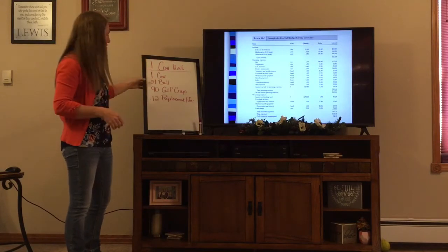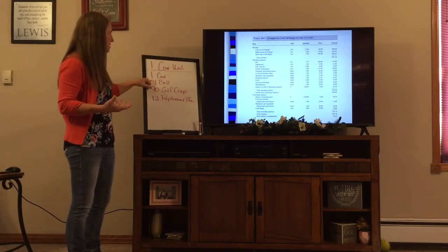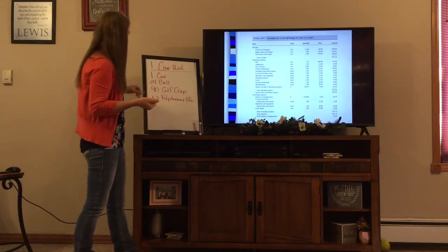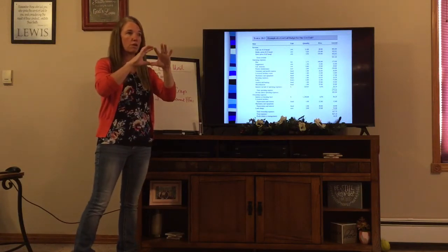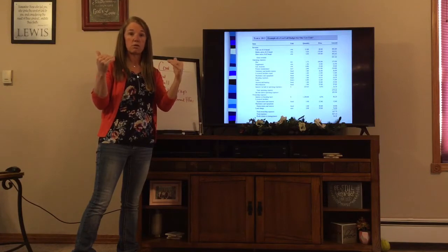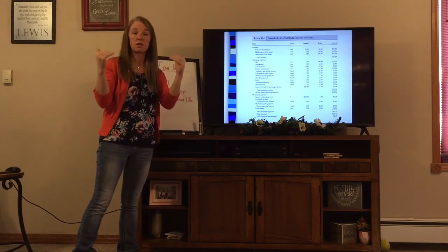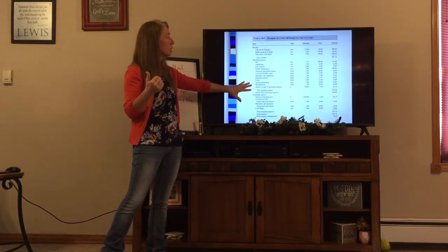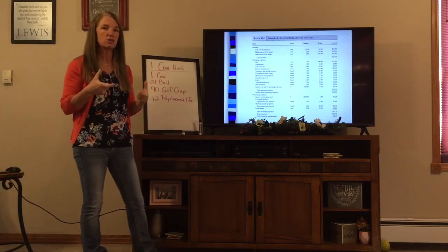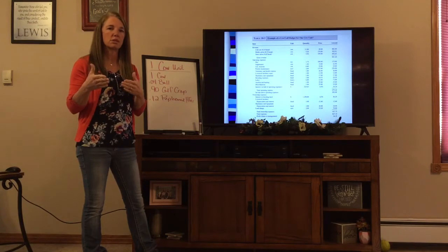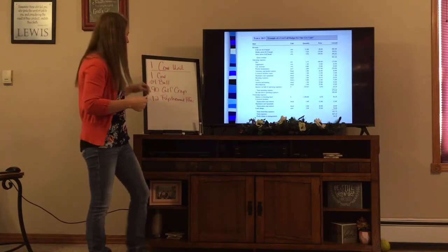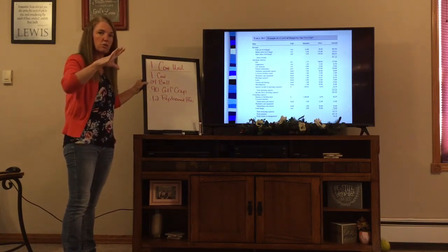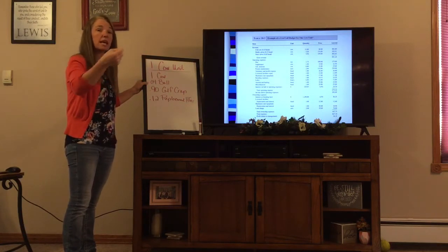This particular case looks at 0.04 bulls, meaning we're running approximately one bull per 25 cows on a percentage basis. So over the course of 100 cows, we would have four bulls included. Oftentimes when these cow-calf budgets are constructed, we take things and think about the percentage of each different item included per cow. We've got one cow, plus a little bull information to include in terms of breeding costs and feed costs for him.